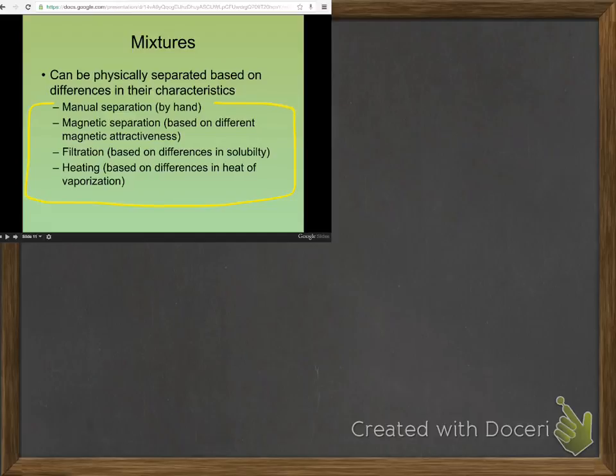The example I give, my favorite, tastiest example, is if you give me a bowl of Skittles and chocolate chips, I will be happy to manually separate them for you. You can pick out all the good parts. We don't usually do that. Magnetic separation is one that you probably used in physical science. Did you do a magnetic separation? You get sand, a magnet, and iron filings, and one is magnetic and one is not.